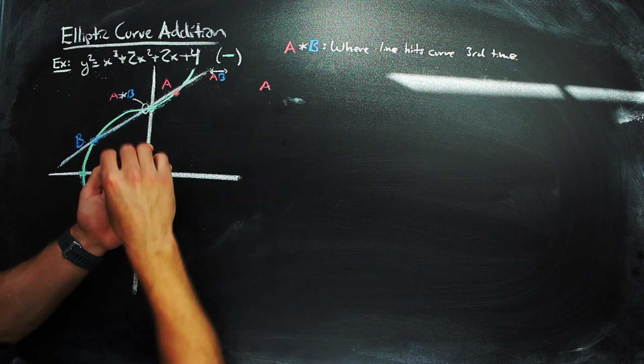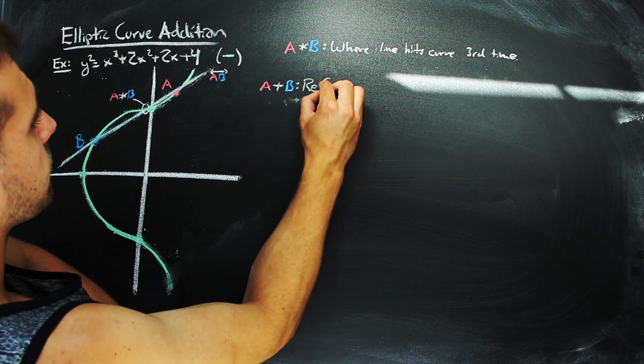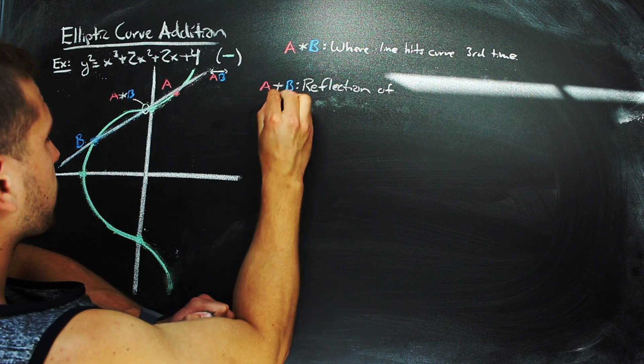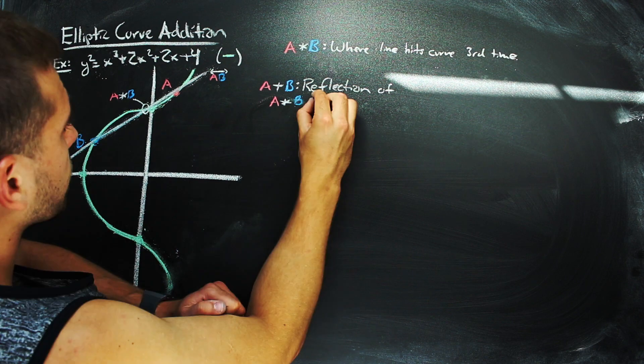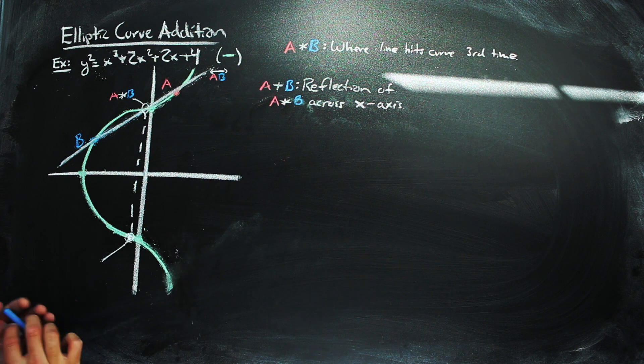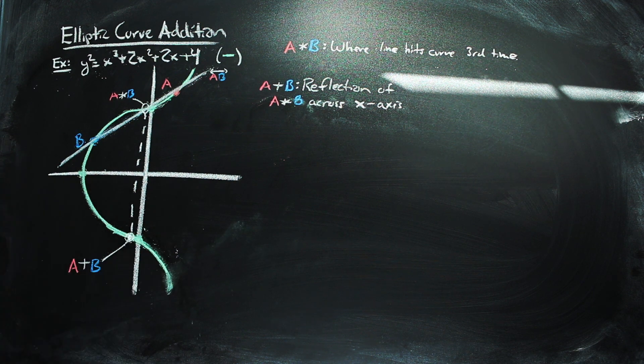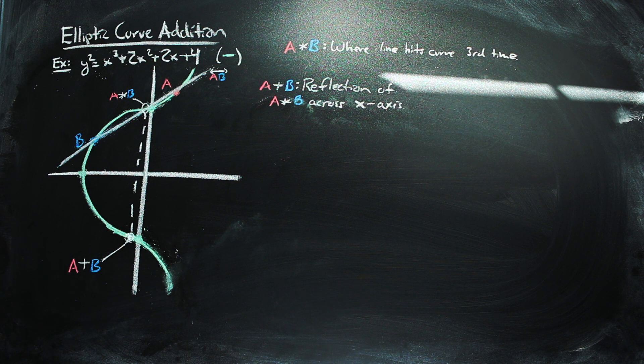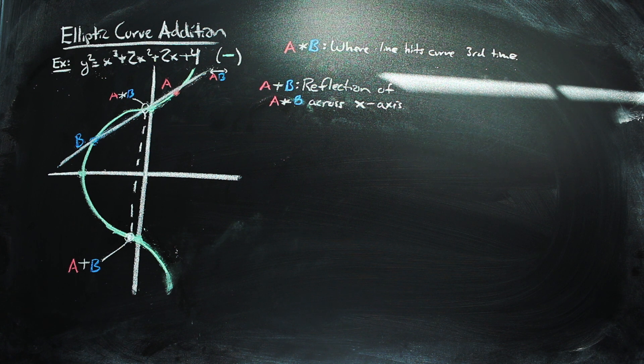Now, the elliptic curve addition of the two points, a and b, is defined as the reflection of their composition, a star b, across the x-axis. We know that the reflection across the x-axis is on the curve because in Weierstrass normal form, we have an equality with y squared, which means the curve is symmetric across the x-axis.